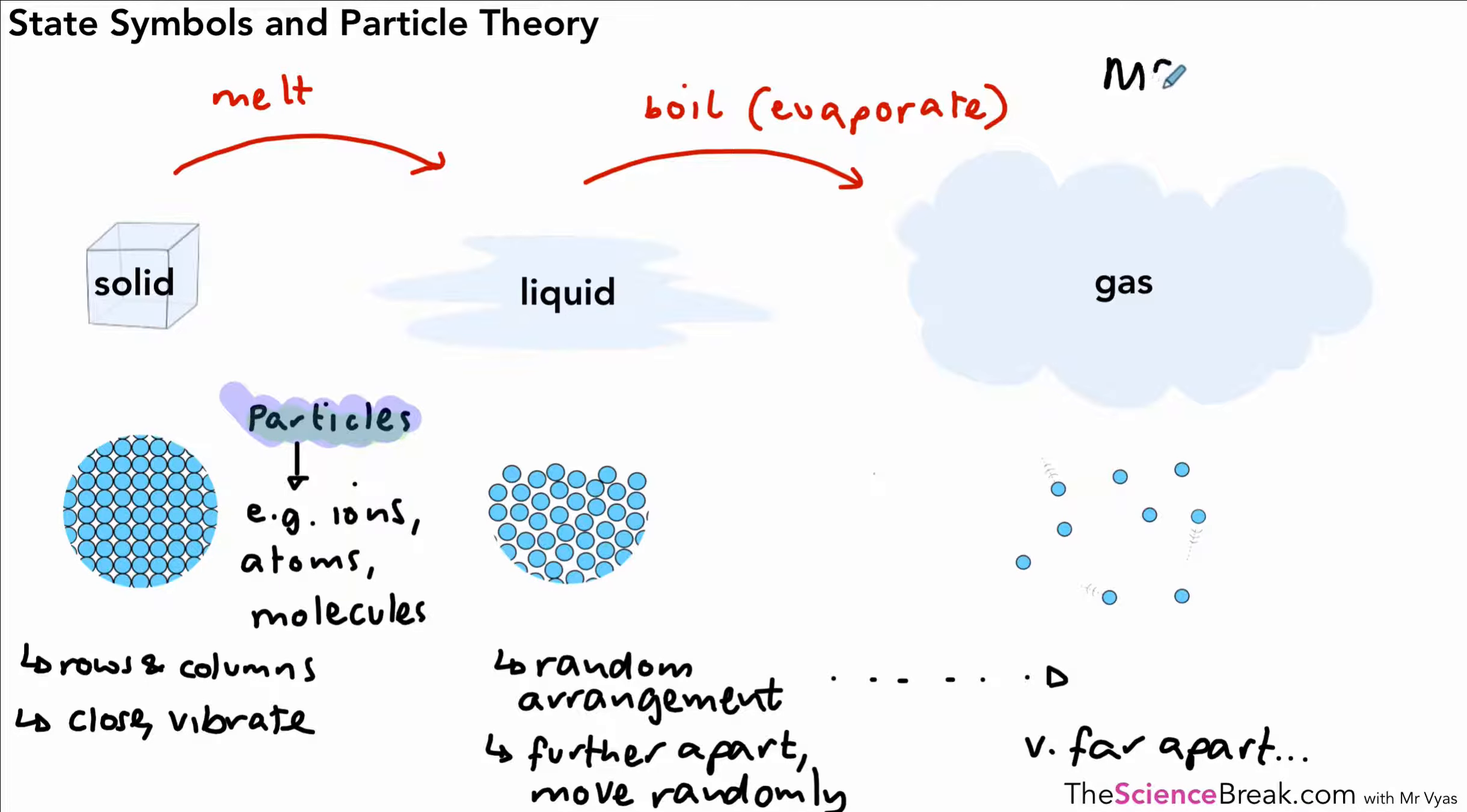What we have here is a way of describing our particles, how they're arranged, and how they go from one state to another. This is a model we use to help us explain how particles behave. Scientists use models a lot because they help us to explain what's going on or what happens, or they help us to understand what's going on. It's a much simplified version of what happens in reality.